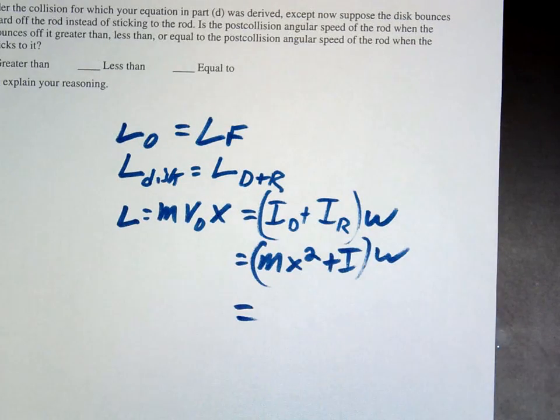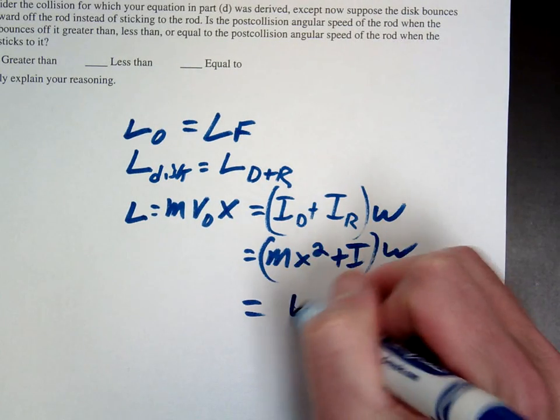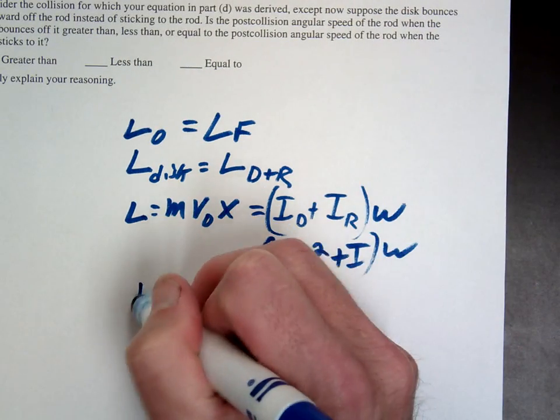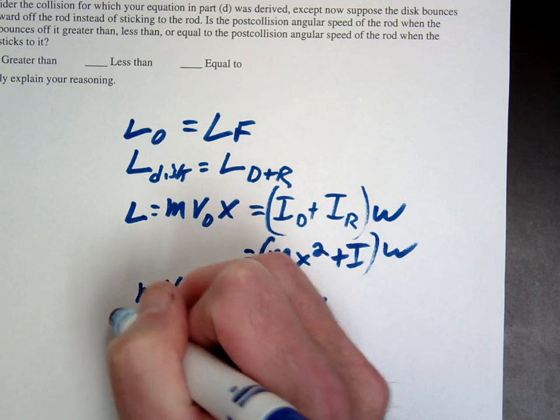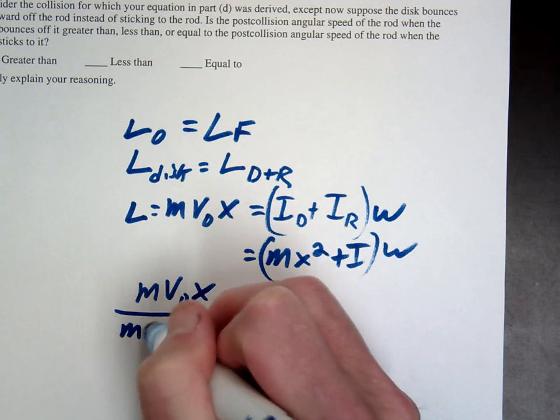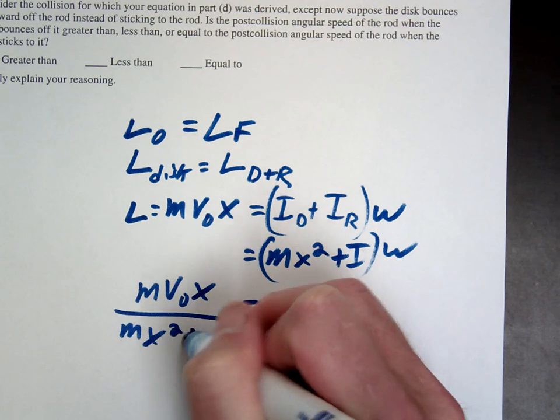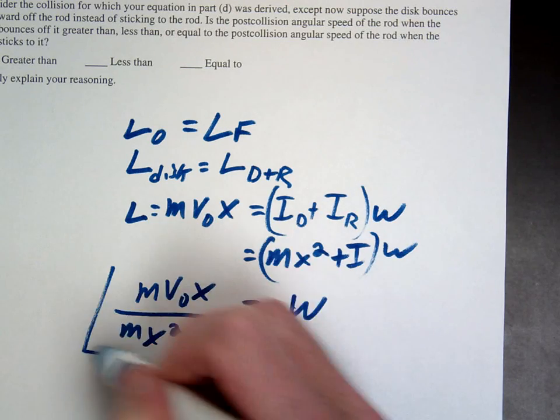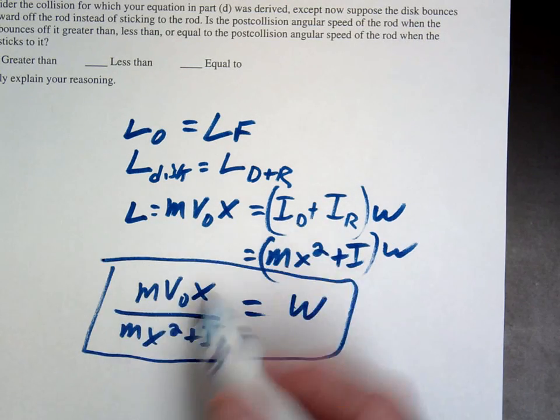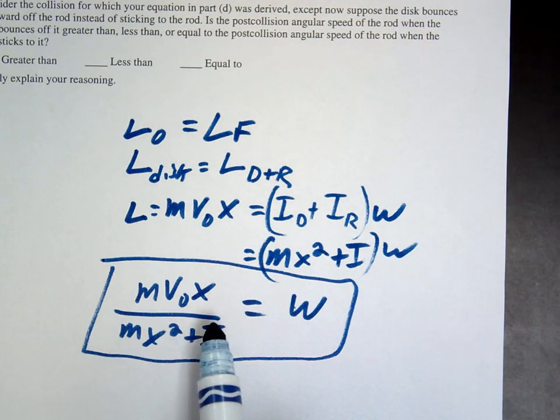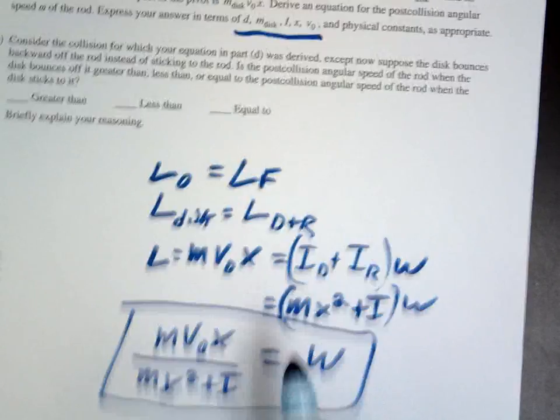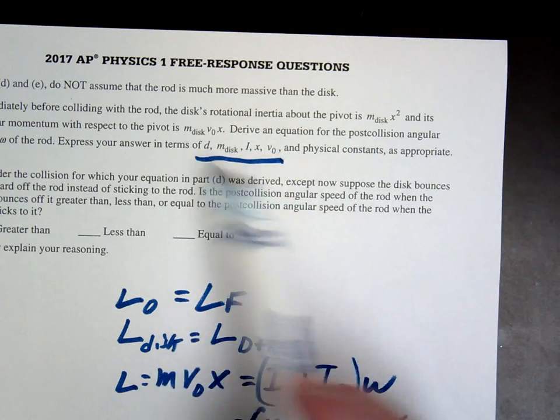Just finish it up. And so your final answer for omega should just be M V0 X divided by Mx squared plus I. I think that's a sufficient answer. I don't think you have to try to simplify this any further. Just make sure all your variables are consistent with the ones that want you to express it.